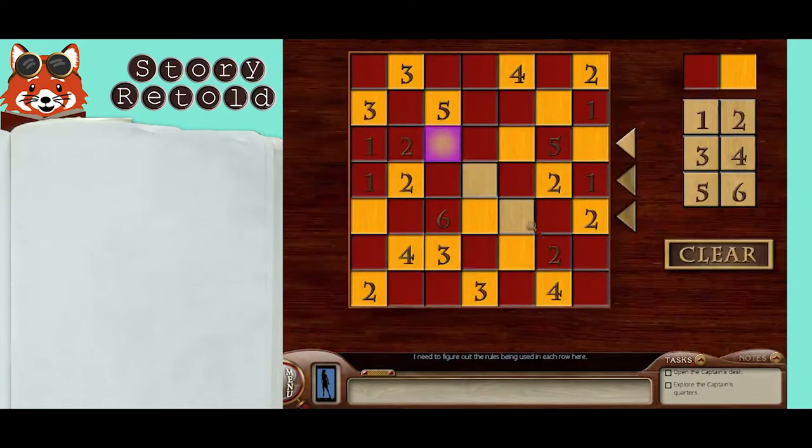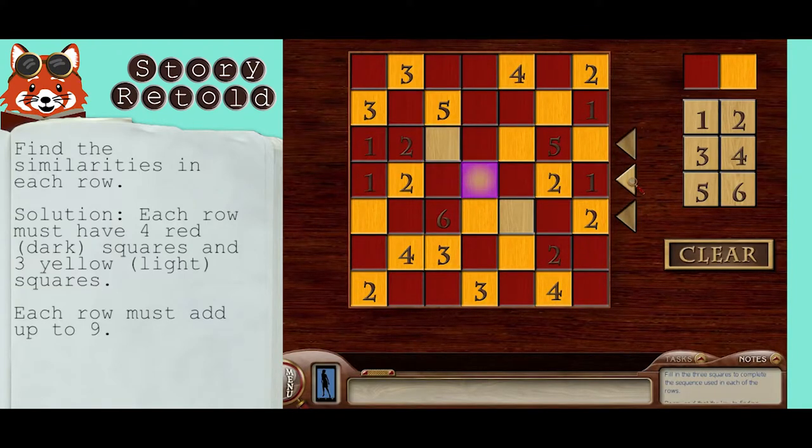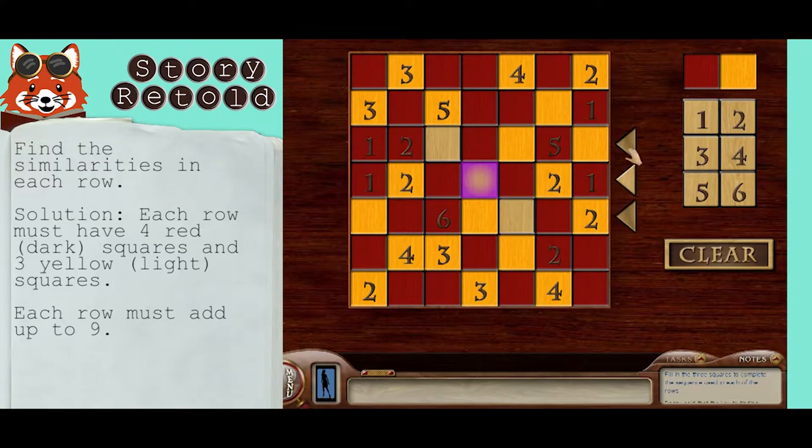I need to figure out the rules being used in each row here. These are the three rows right here that you need to fill with colors and numbers. Figure out what the similarities in each row are and try to match them.